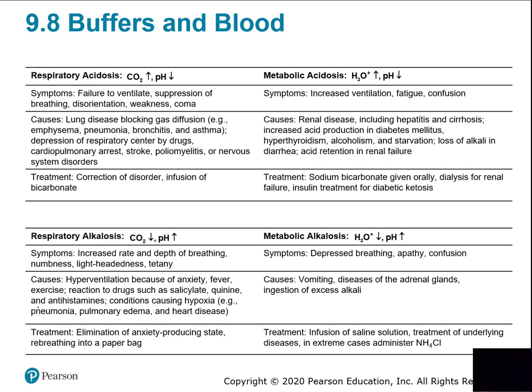Worst case scenario: what happens if the buffers get overwhelmed — if there's so much acid the buffers can't balance it? You can end up with respiratory acidosis or metabolic acidosis. Respiratory means there's an issue with your lungs — respiratory acidosis is acidosis because of lung issues — typically because you can't get rid of carbon dioxide.